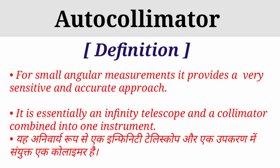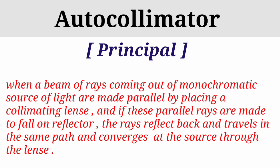A beam of rays coming out of a monochromatic source of light is made parallel by placing a collimating lens. If these parallel rays are made to fall on a reflector, the rays reflect back and travel in the same path, and converge at the source through the lens.